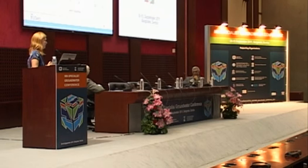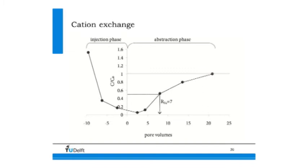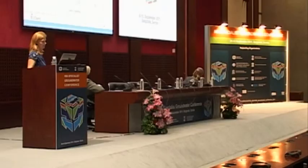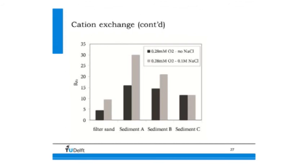Beyond adsorption, we also examined cation exchange capacity of the iron oxides, which may occur when switching between water types during injection and abstraction. We ran columns with anoxic high-sodium water. During injection, desorption of iron 2 from the sediment was observed; during abstraction, retardation occurred again. Comparing sediments, the one that performed best for iron removal also had the highest cation exchange capacity, confirming that exchange capacity may also play a role in this process.